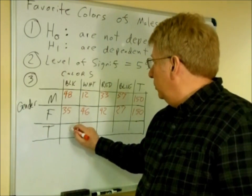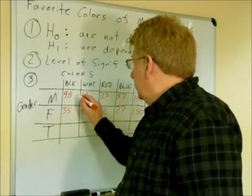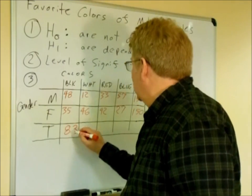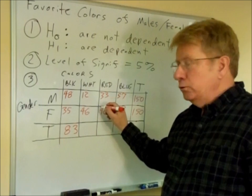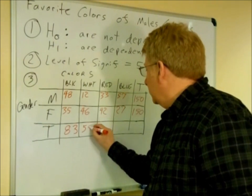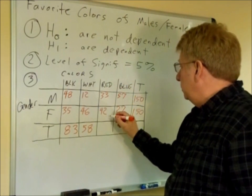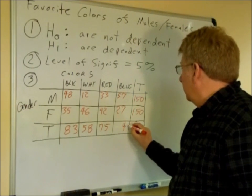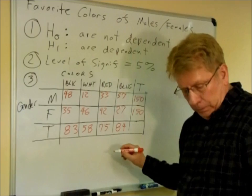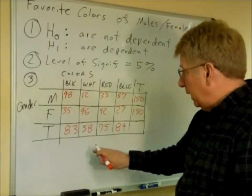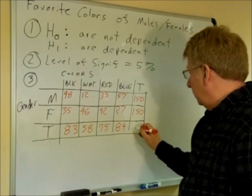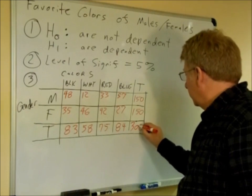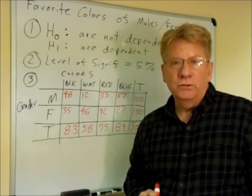Now, we have to add these up and come up with a total across the column for black. So 48 plus 35 gives us 83. And 12 plus 46 gives us 58. Red, 33 plus 42, 75. Blue, we have 84. Now, if we add up across this row, we should come up with the same total as across this column of 300. This is our contingency table.